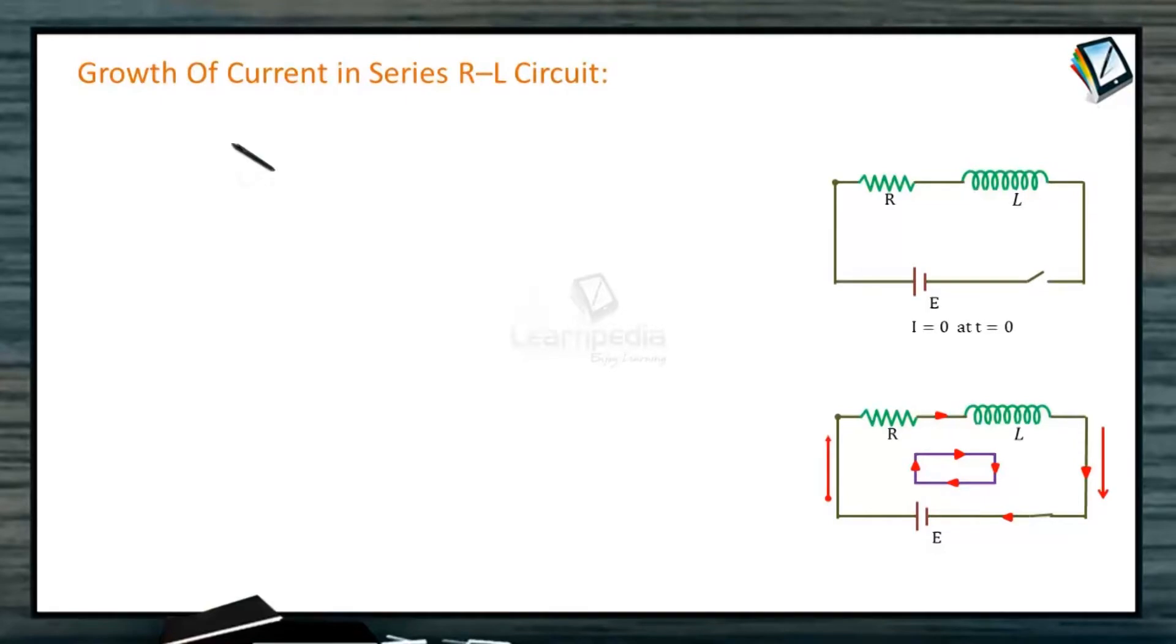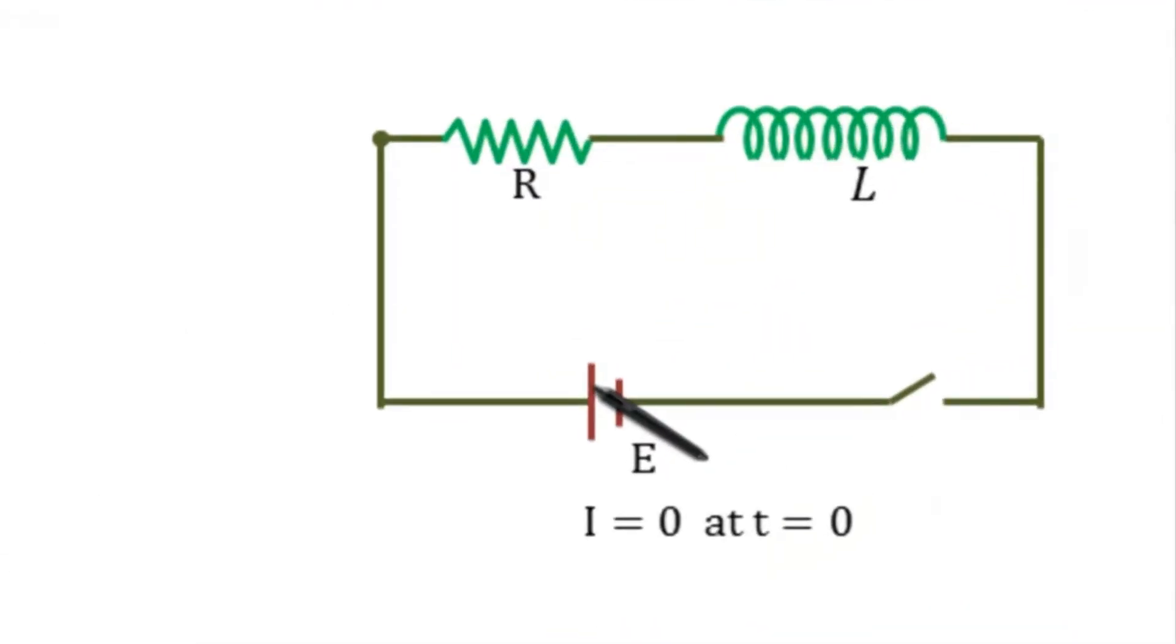First, let us study the growth of current in series R-L circuit. We have a battery connected here. This is the positive terminal battery, this is the negative terminal battery. This is the key in the given circuit. We have a resistance R and an inductor L.